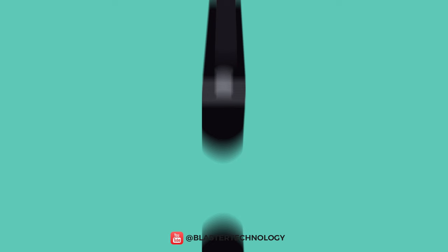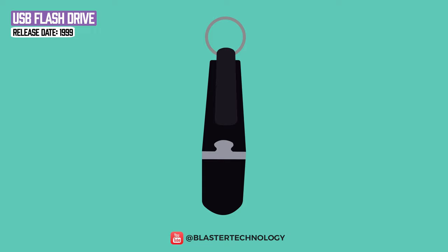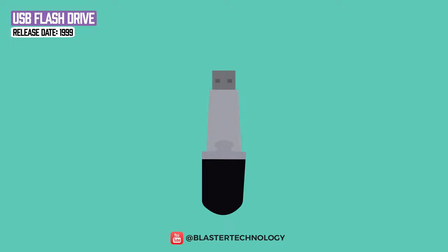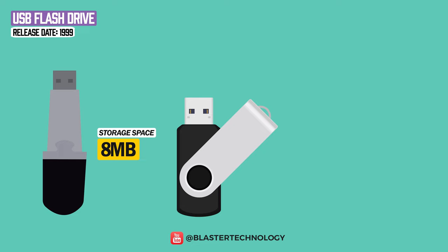Also in 1999, M-Systems developed the first USB flash drive, a plug-and-play data storage device. The first USB flash drive had a storage capacity of 8 megabytes, gradually increasing to even 1 terabyte.